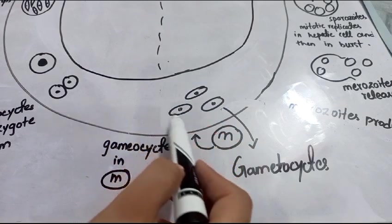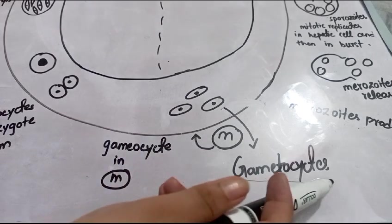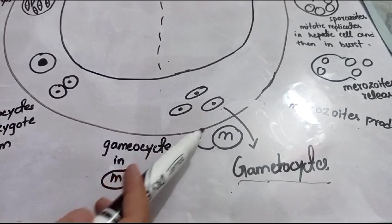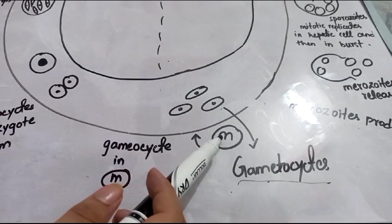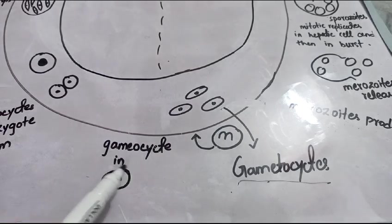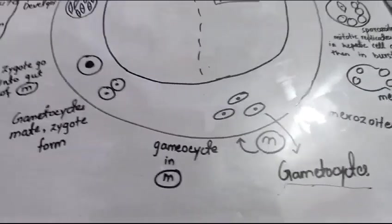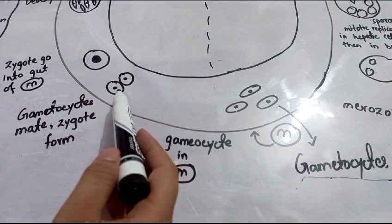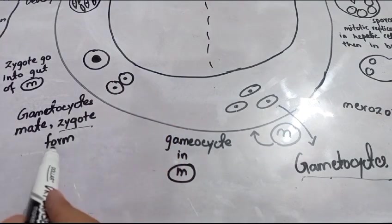The person affected with malaria contains some types of gametocytes — these may be male and female gametocytes. These male and female gametocytes will enter into the mosquito. Now these gametocytes are inside the mosquito and they will fuse with each other, as represented in the diagram — the male and female gametocytes fuse and a zygote is formed.